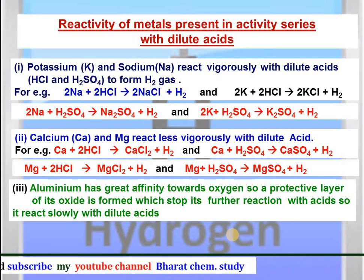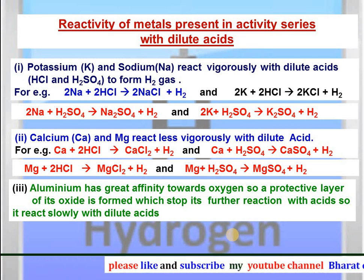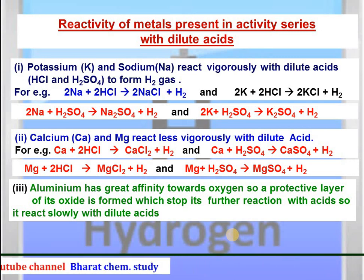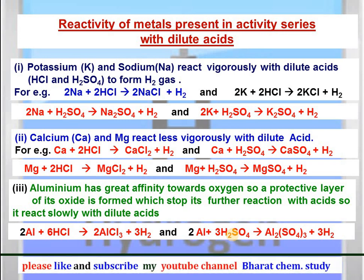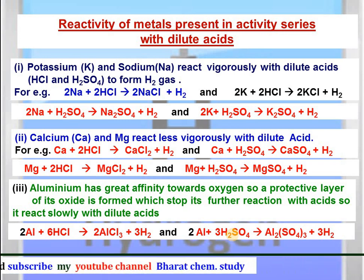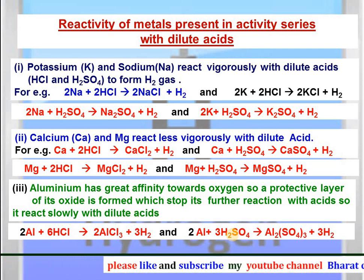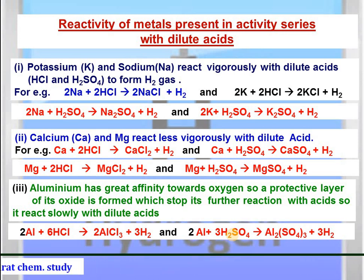Aluminium has a great affinity for oxygen, so a protective layer of aluminium oxide forms over it which stops further reaction with acid. Therefore it reacts slowly with dilute acids. The reaction can be represented as: aluminium reacts with dilute HCl to form aluminium chloride and hydrogen gas. Similarly, aluminium reacts with dilute H2SO4 to give aluminium sulfate and hydrogen gas.